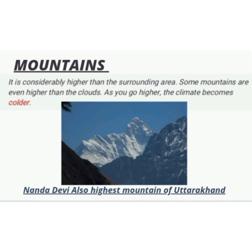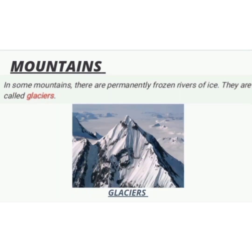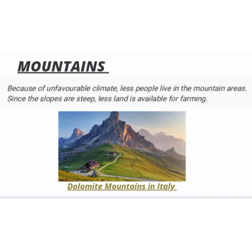Some mountains are even higher than the clouds, and when you go higher, the climate becomes colder. In some mountains, there are permanently frozen rivers of ice, and they are called glaciers. Because of the unfavourable climate, fewer people live in mountain areas.